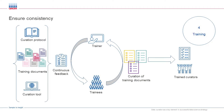The fourth aspect — and this is for larger curation projects where you have more than one curator — is something you don't need to think as much about for a very small project with just one curator. But when you have, let's say, five or ten curators, you really want to have consistency in how data is extracted and how data is annotated, so that your entire curated dataset makes sense.